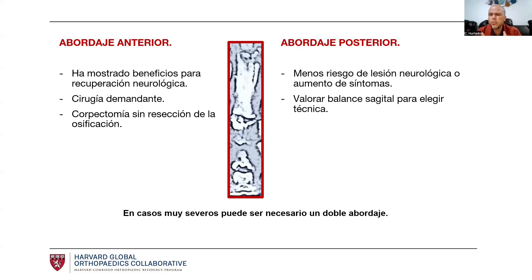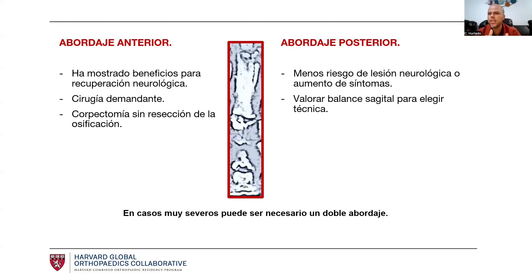Estructuralmente, la osificación está en una relación muy íntima con el propio saco dural. Cuando se retira, normalmente se recomienda dejar flotando la estructura osificada, ya que el riesgo de una lesión dural es amplio, así como el de aumentar los síntomas neurológicos centrales. El abordaje posterior se considera con menos riesgo de lesión neurológica, y aquí tenemos que valorar el balance sagital previo para determinar cuál es la mejor técnica. El abordaje posterior normalmente se determina como mejor opción cuando hay tres o más niveles afectados.